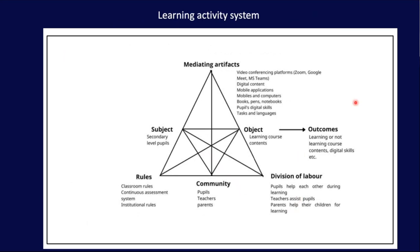This is the learning activity system. The only difference here is secondary level pupils as subject, and their object is learning course content. Other mediating artifacts are almost similar. There are the same rules, the same community, and division of labor — for example, pupils helping each other during learning is the horizontal relationship, whereas if teachers assist pupils, it is the vertical relationship.